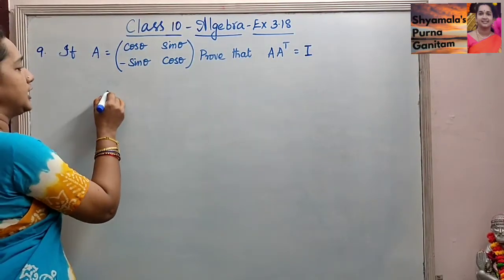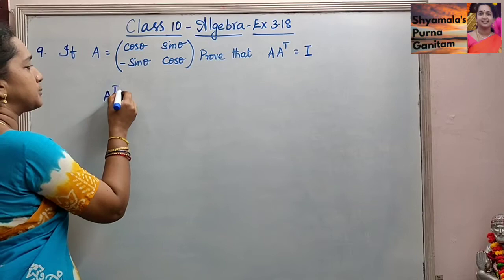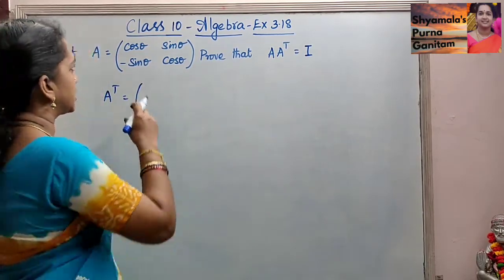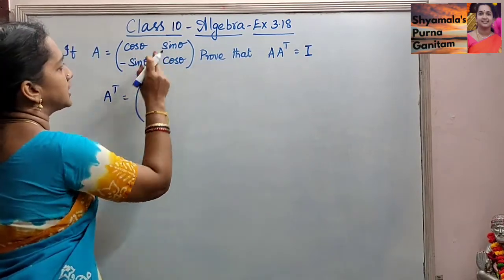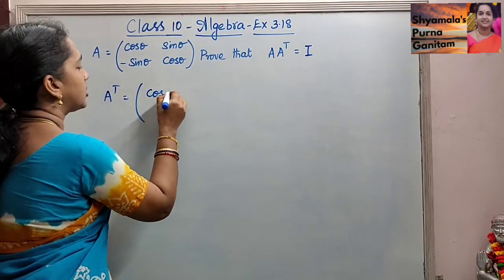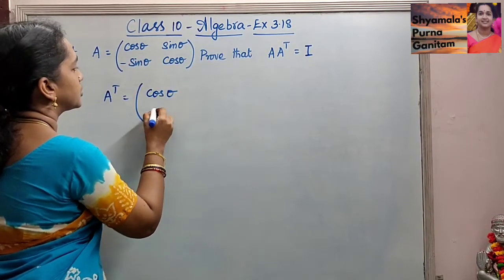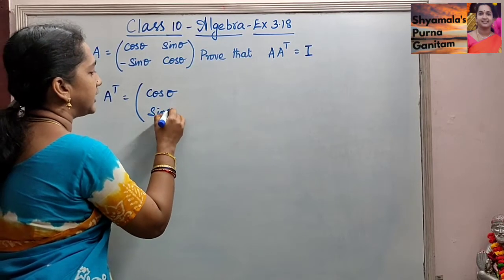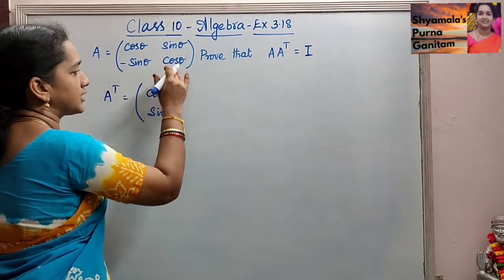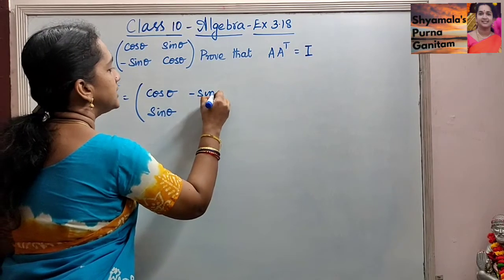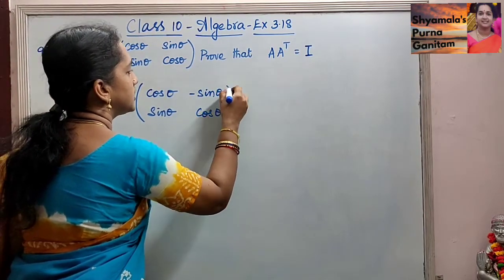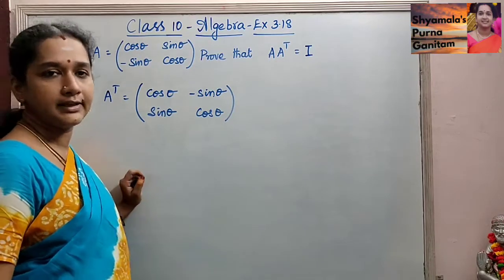So first, A is given already. The transpose of A will have rows and columns interchanged. So here cos theta, sin theta — that is in the first row — will change to the first column. So we get [[cos theta, -sin theta], [sin theta, cos theta]] as the transpose of A.